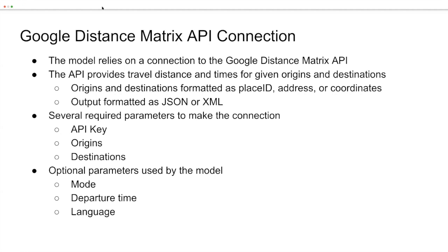To make this API connection, several required parameters were needed: an API key — a random character string you must request from Google — and the origins and destinations, formatted as strings with plus signs instead of spaces and locations separated by a vertical bar. Optional parameters our model used included mode, set to driving; departure time, set to now, which causes the API to return travel data accounting for current traffic; and language, set to English.